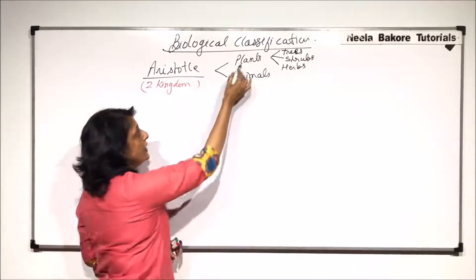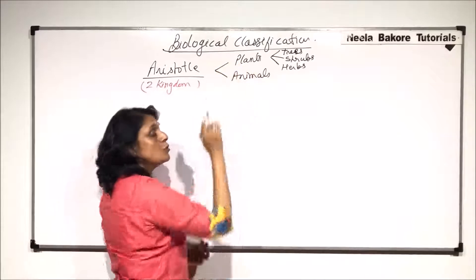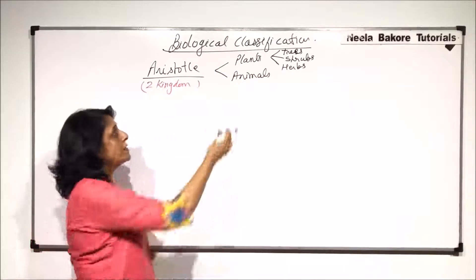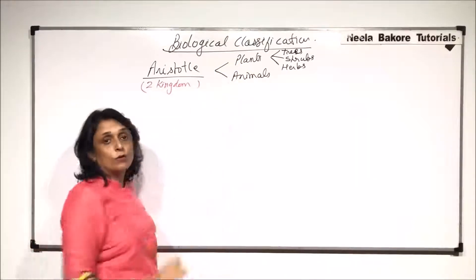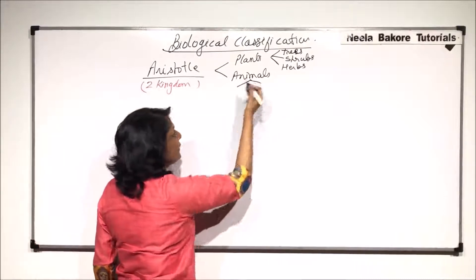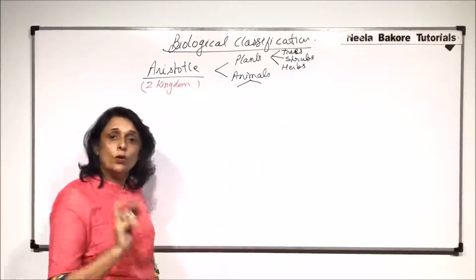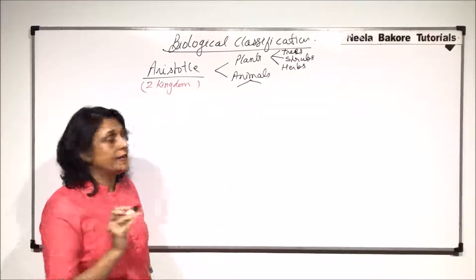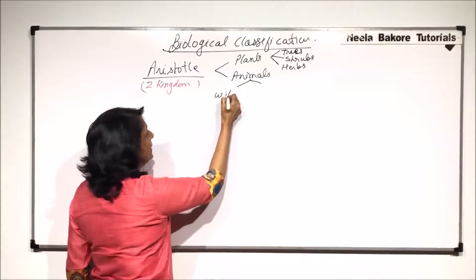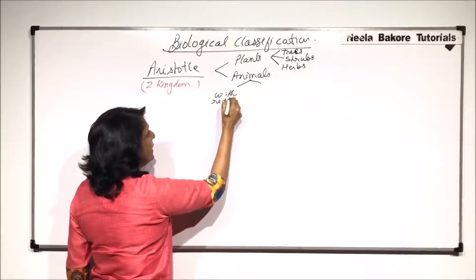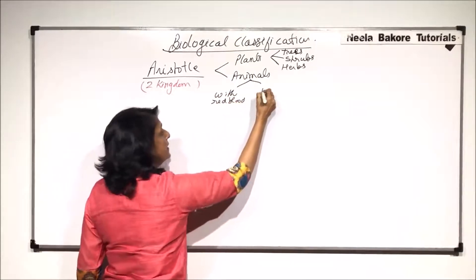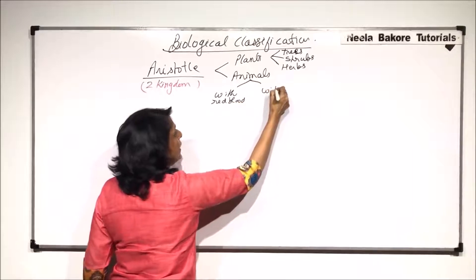Plants included those who could synthesize their own food, that is autotrophs, and heterotrophs. Animals were further classified into only two categories: the ones with red blood and the others without it.